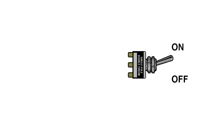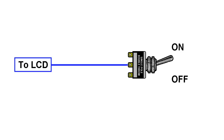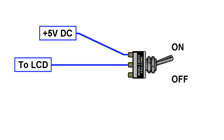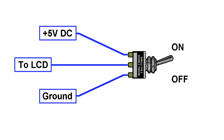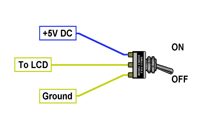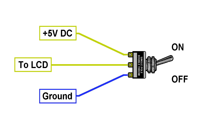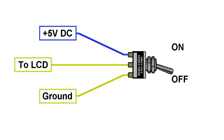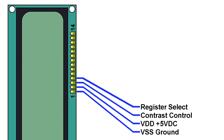So imagine you had a toggle switch. You could hook up this pin to the center of the switch and then connect 5 volts to one side and ground to the other. That way when you move the switch back and forth it will pull the line high or pull the line low, telling it which type of data you want to send it. The next pin is for read/write.